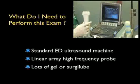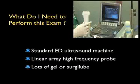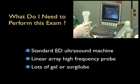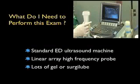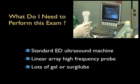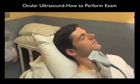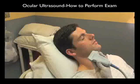So what do I need to perform this examination? Any standard emergency department bedside ultrasound machine will do well. We'll need the high-frequency linear array type probe — that's the probe you're already using for vascular access — which we'll be using for ocular ultrasound. We'll need lots of gel, or preferably surgery lube, as surgery lube is less irritating to the closed eyelid. Now let's watch a video on how to perform the ocular ultrasound examination.